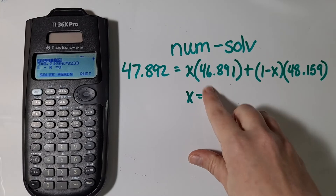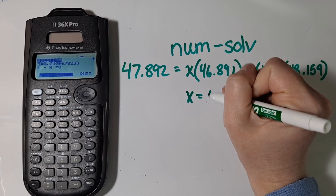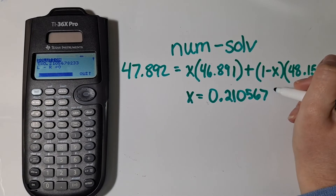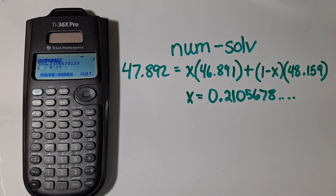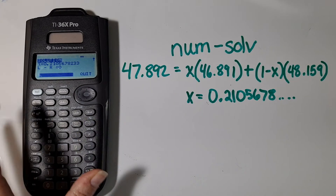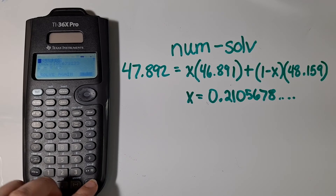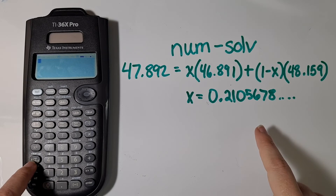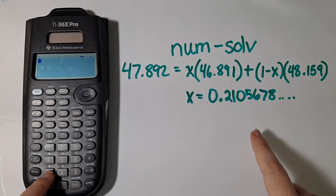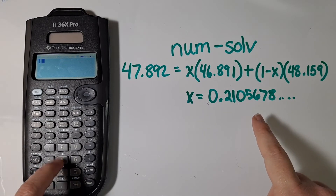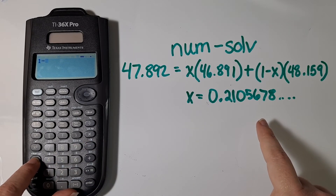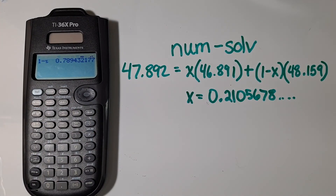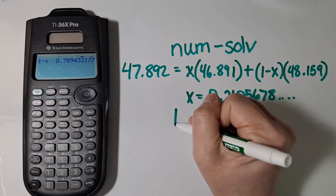So x is equal to 0.2105678 and so on. There's my answer. Now I can quit this menu, and that x is actually stored as x in our variables. So to do the 1 minus x, I can do 1 minus and then recall that x value. I hit enter and you can see that it has given me what the 1 minus x is.